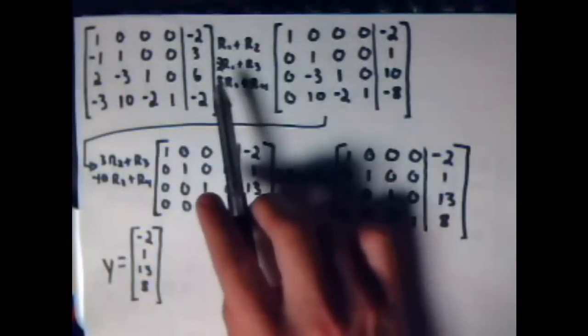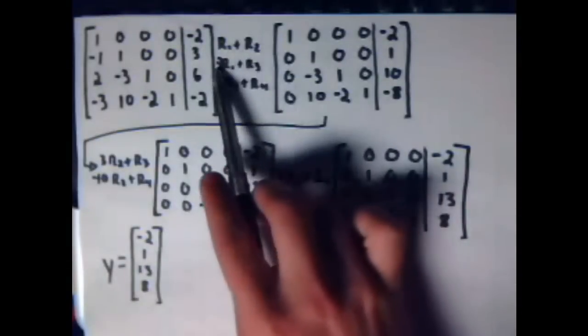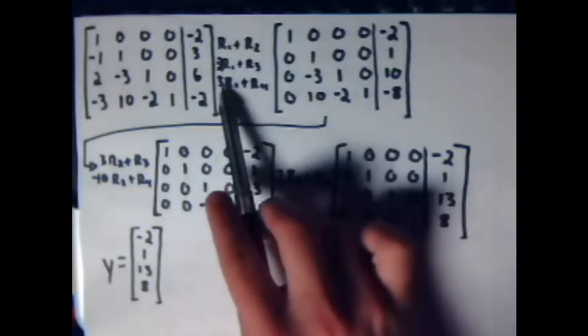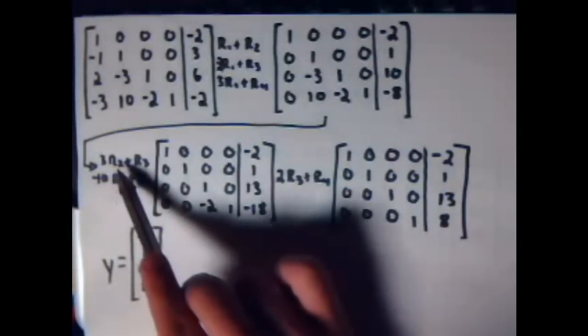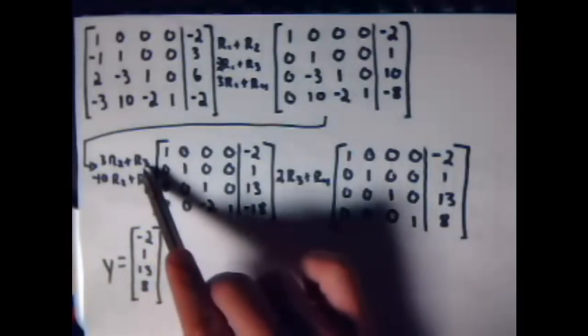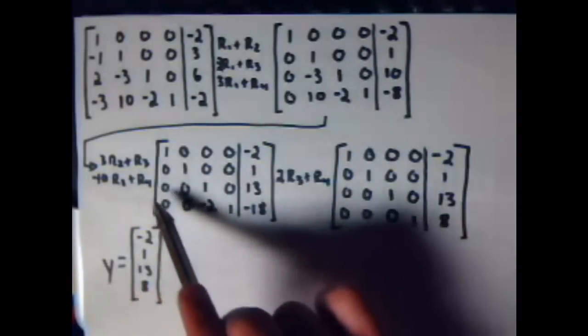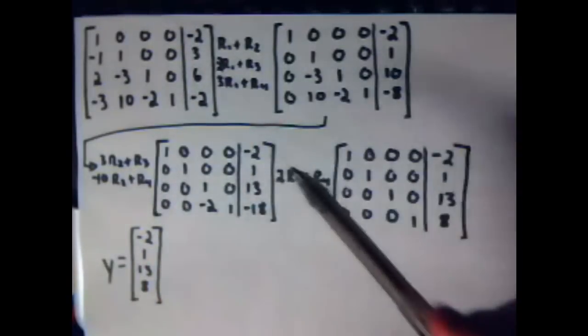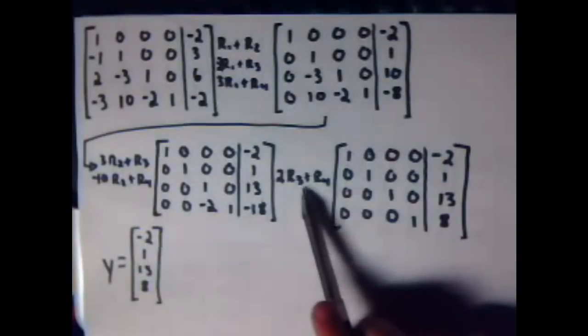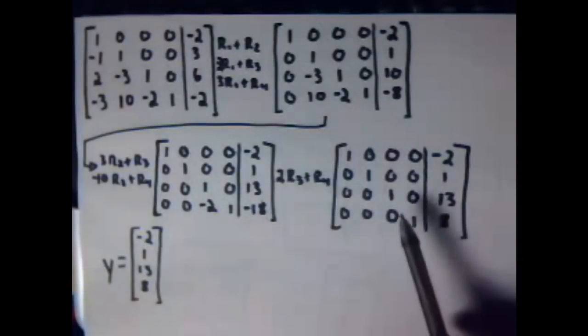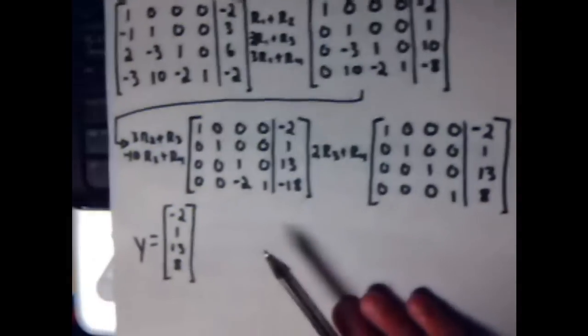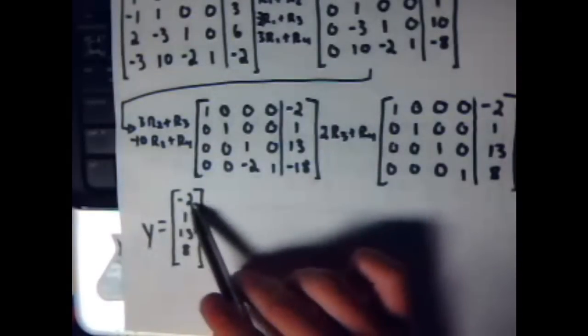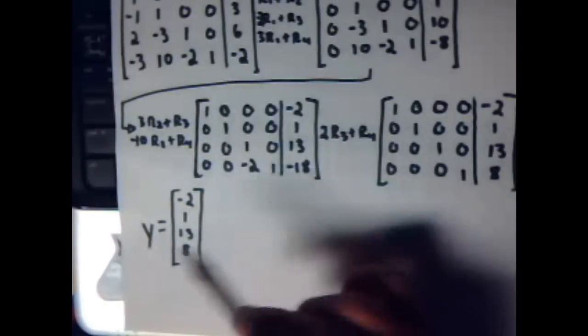Well, when we augment it, we do our math out, row 1 plus row 2, negative 2 row 1 plus row 3, and 3 row 1 plus row 4. You get this, came down here, 3 times row 2 plus row 3, negative 10 row 3 plus row 4. We'll get you this. Again, you simplify with a 2 row 3 plus row 4, and here we already see that we have our identity matrix augmented with, what is it? Our y. So our y value comes out to be negative 2, 1, 13, and 8.